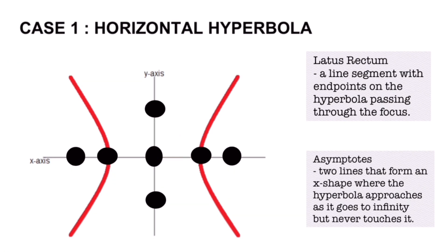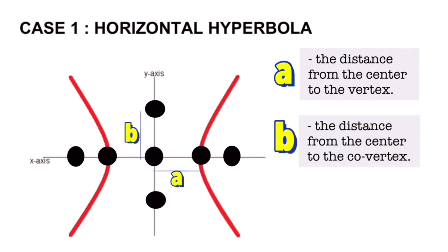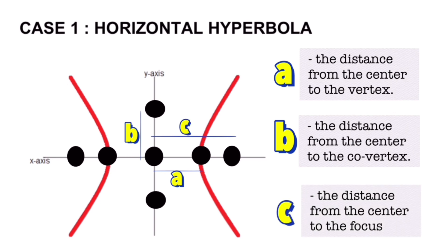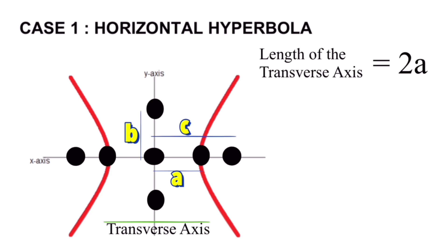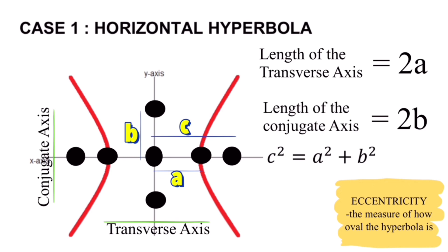Now let's look at some important lengths of a hyperbola. The distance from the center to the vertex is represented as letter A. The distance from the center to the co-vertex is represented as letter B. The distance from the center to the focus is represented as letter C. The length of the transverse axis, from one vertex to the other, is 2A. The length of the conjugate axis, from one co-vertex to the other, is 2B. The equation relating these three lengths is c² = a² + b². Eccentricity is defined as the measure of how oval the hyperbola is, and the formula is E = c/a.